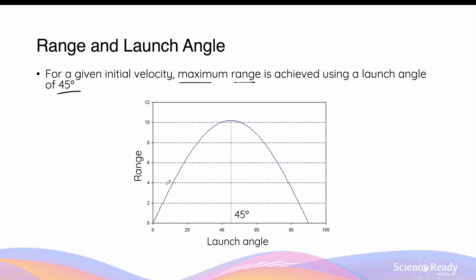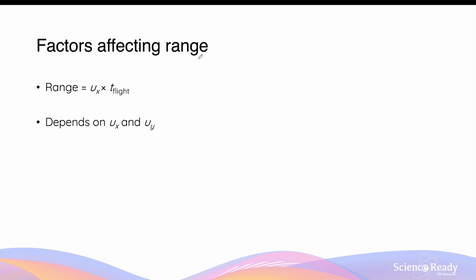When the launch angle decreases to less than 45 degrees, the range will decrease from its maximum value. Likewise, if the launch angle increases from 45 degrees, the range also decreases from its maximum value. We can understand the effect of launch angle on the range of an object in projectile motion by looking at the mathematical expressions of range.